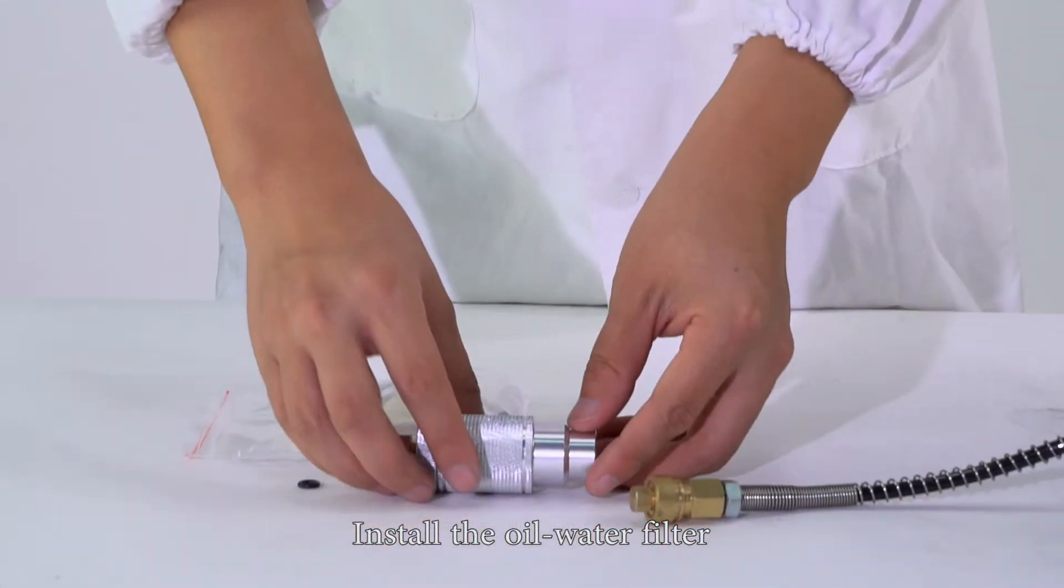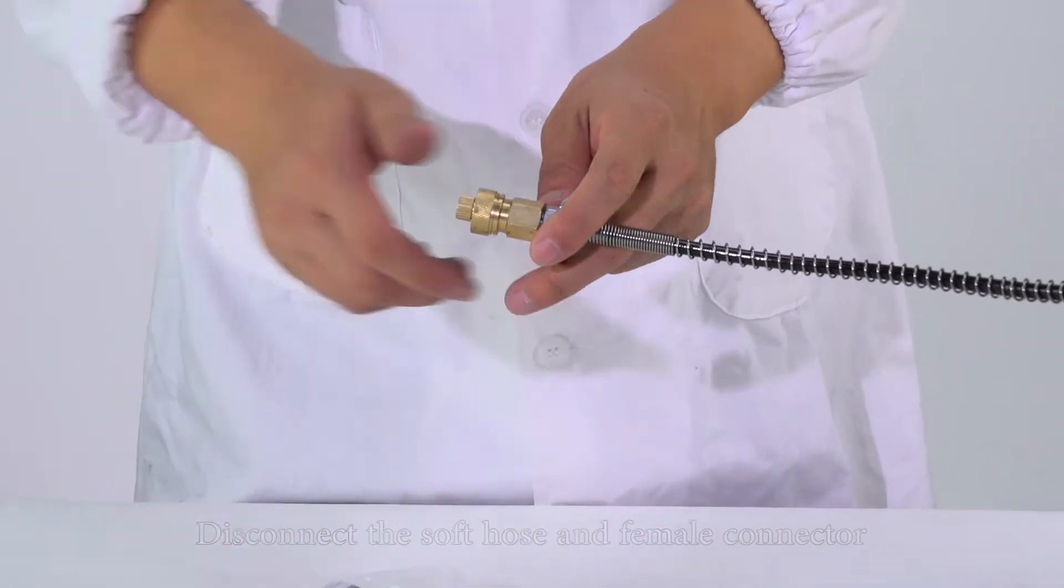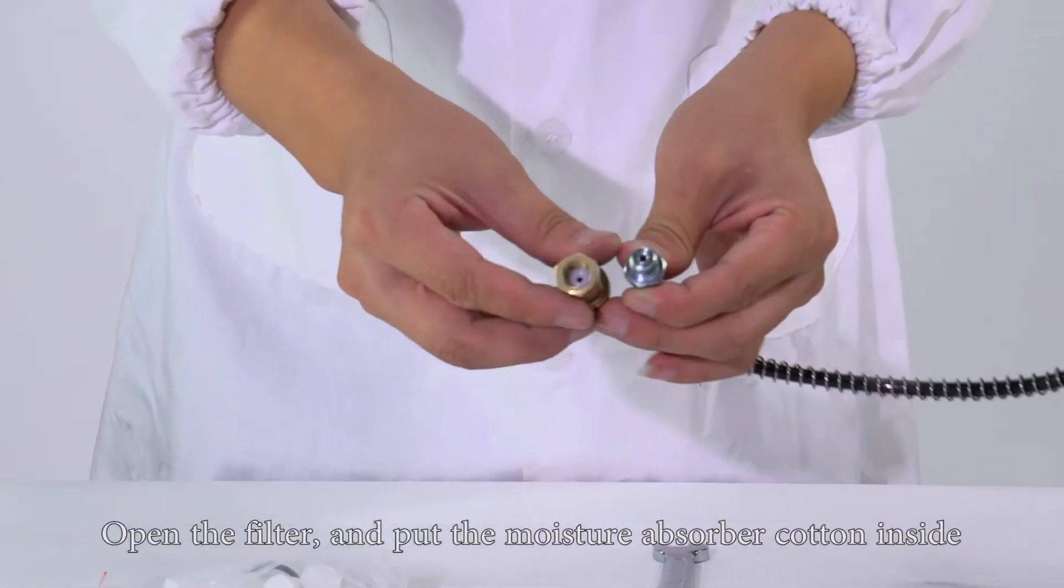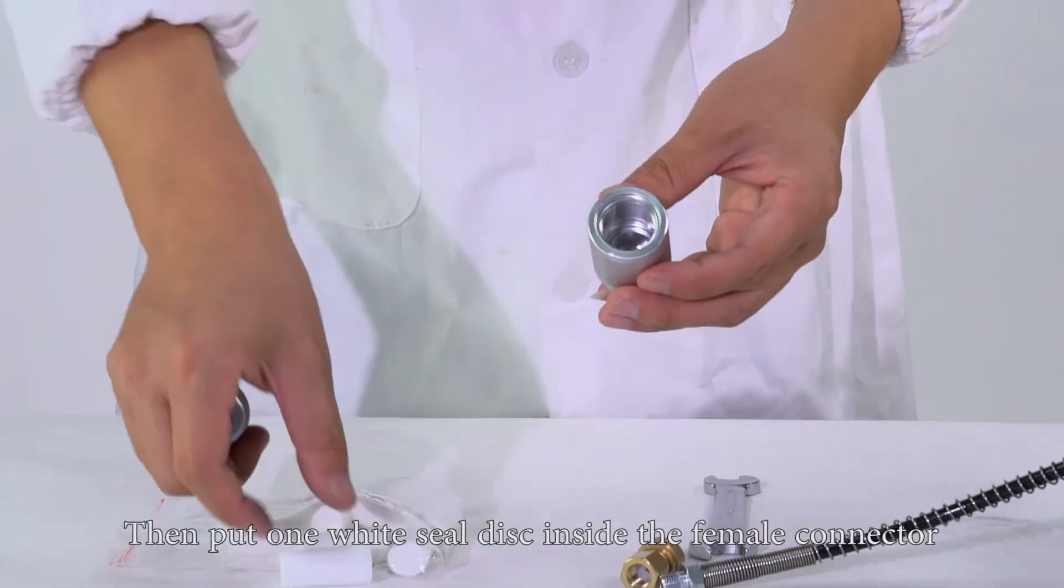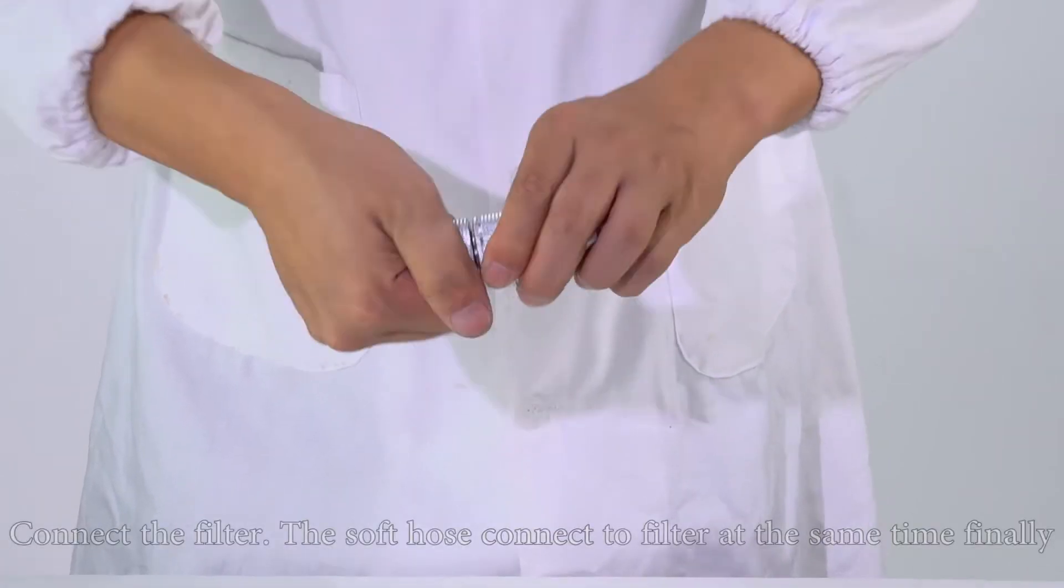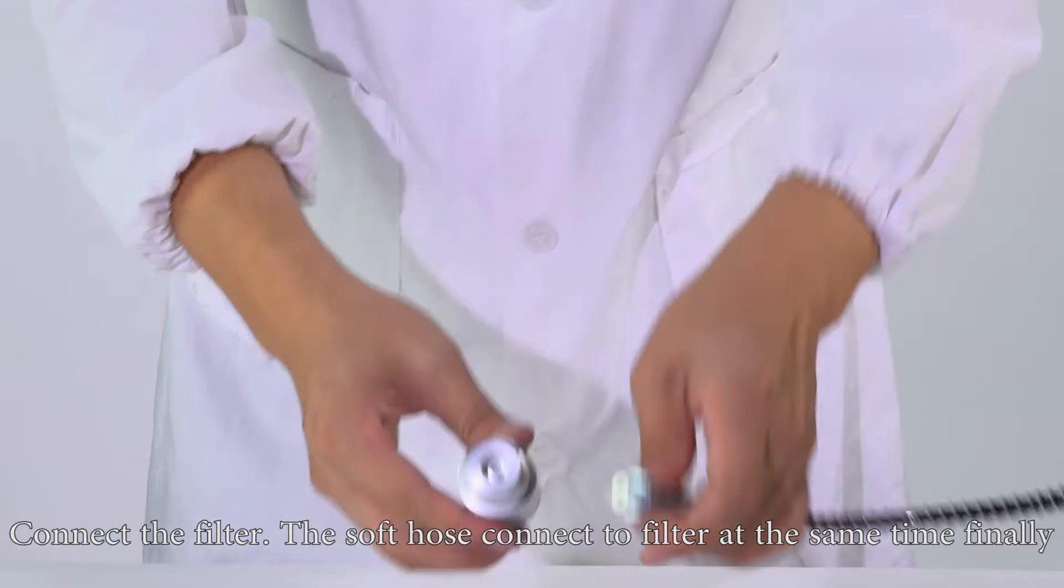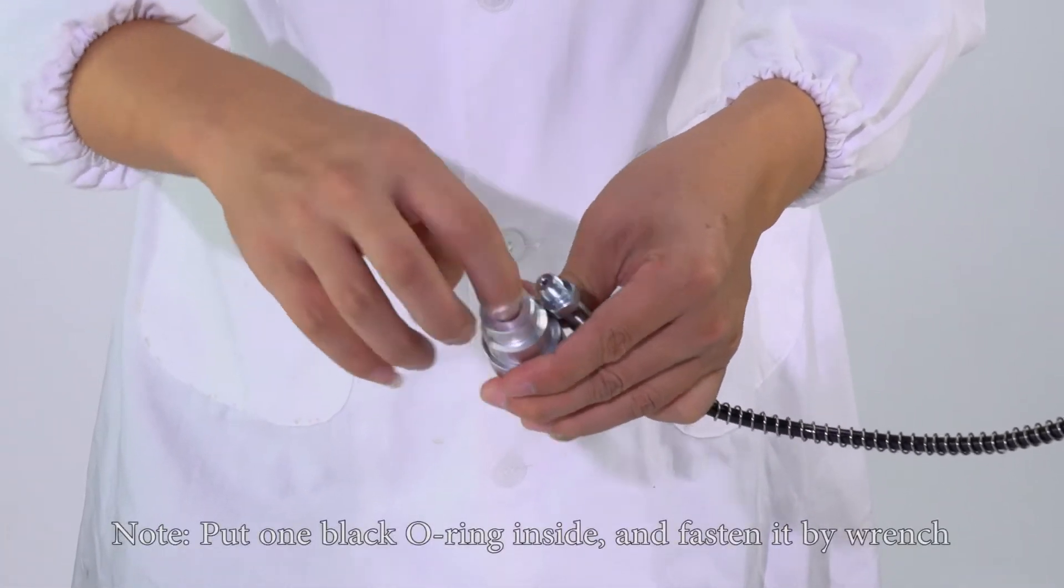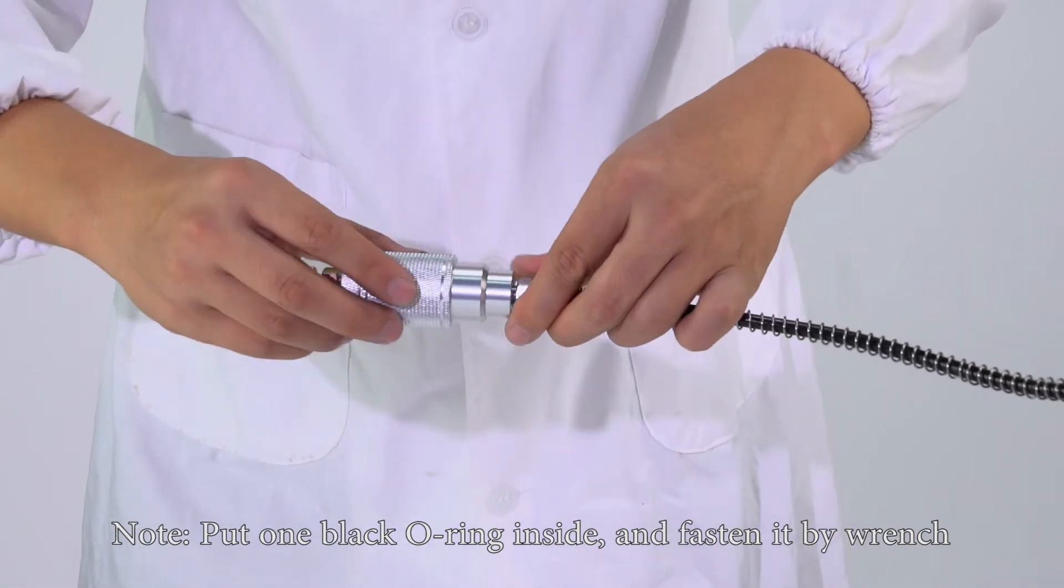Install the oil water filter. Disconnect the soft hose and female connector, then open the filter and put the moisture absorber content inside. Put one white seal disc inside the female connector and connect the filter. The soft hose connects to the filter at the same time. Note: Put one black O-ring inside and fasten it with a wrench.